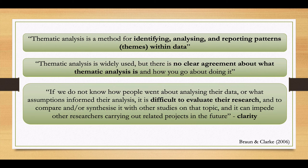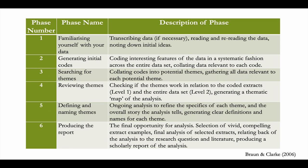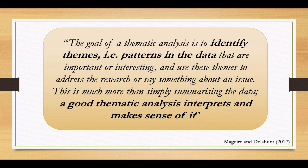As Braun and Clarke said in their paper, if we do not know how people went about analyzing their data or what assumptions informed their analysis, it's very difficult to evaluate the research — so clarity is needed. Their six-phase system involves: familiarizing yourself with data, generating codes, searching for themes, reviewing your themes, defining and naming these themes, and ultimately producing the report. A recent paper by McGuire and Del Hunt says the goal of thematic analysis is to identify themes and patterns within the data that are important or interesting, and to use these themes to address the research — it's much more than simply summarizing the data.